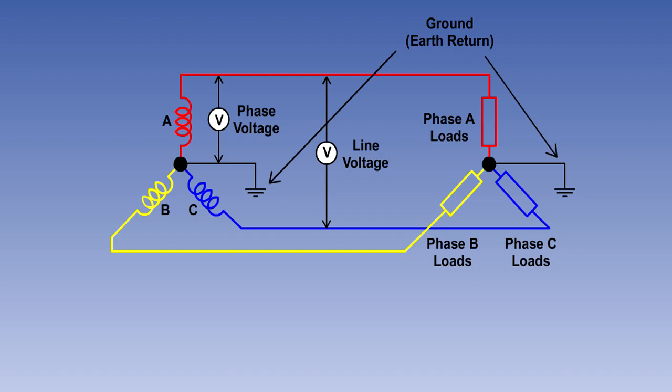In this type of AC generator, the phase voltage and line voltage are different. Because phase voltage is measured across one phase, whereas line voltage is measured across two phases, and is the vector sum of the two.